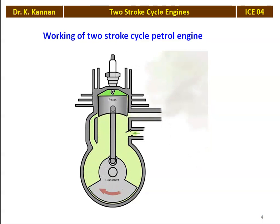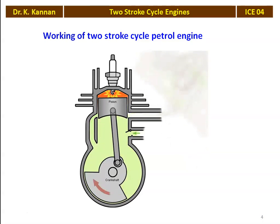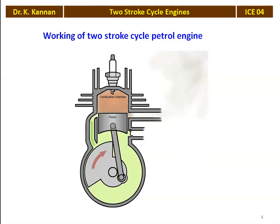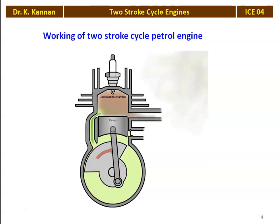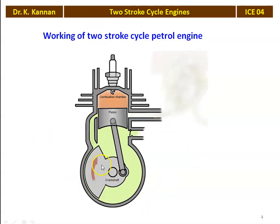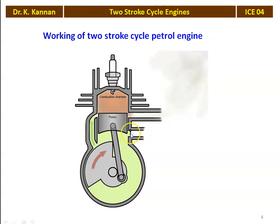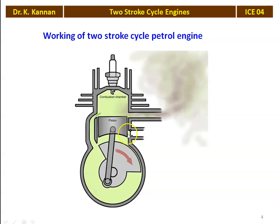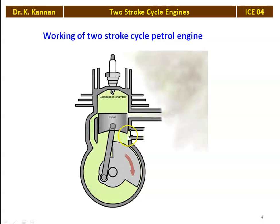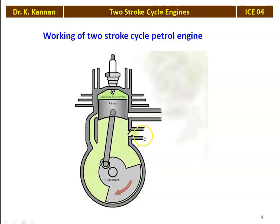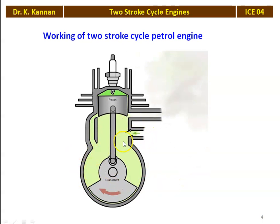This is the working of a 2-stroke cycle petrol engine. We have a spark plug at the cylinder head. The piston is reciprocating. This is the intake port, through which the air-fuel mixture from the carburetor is entering. There is a small flap-type valve that opens and the fresh air-fuel mixture gets into the crankcase.